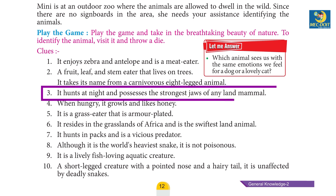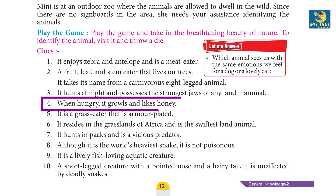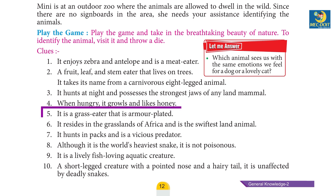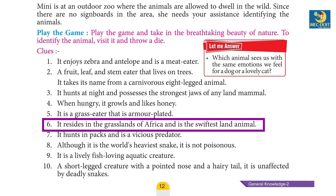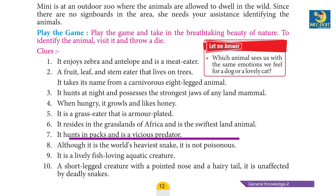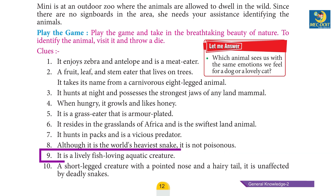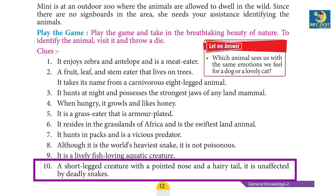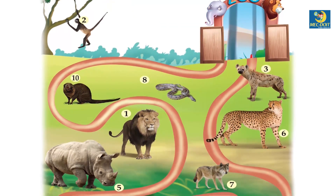Clue three: it hunts at night and possesses the strongest jaws of any land mammal. Clue four: when hungry it growls and likes honey. Clue five: it's a grass eater that is armor-plated. Clue six: it resides in the grasslands of Africa and is the swiftest land animal. Clue seven: it hunts in packs and is a vicious predator. Clue eight: although it is the world's heaviest snake, it is not poisonous. Clue nine: it is a lively, fish-loving aquatic creature. Clue ten: a short-legged creature with a pointed nose and a hairy tail — it is unaffected by deadly snakes. Answer: do it yourself.